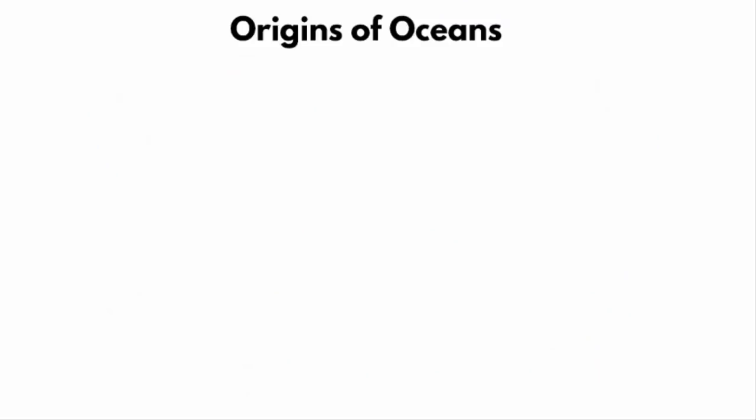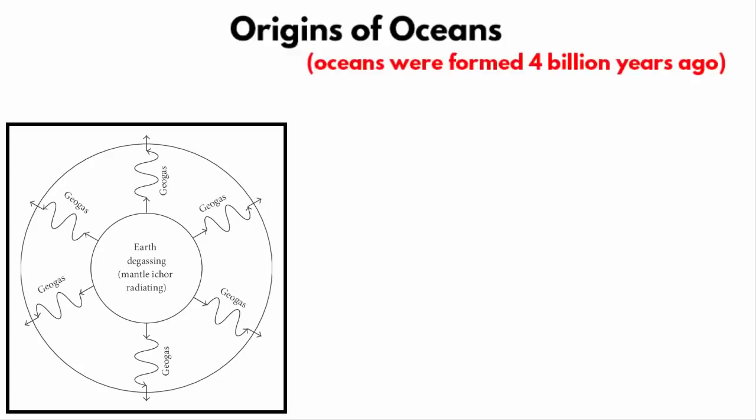The most popular theory behind how Earth got its ocean is that the oceans were formed 4 billion years ago with the continual degassing of the Earth's interior.